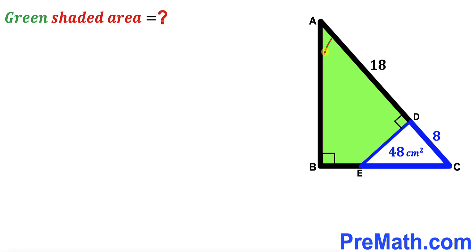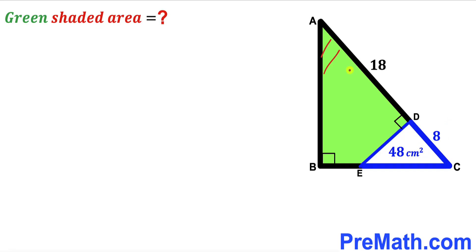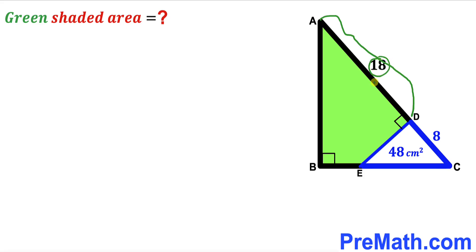Welcome to PreMath. In this video we have got a big right triangle ABC that consists of this blue right triangle CDE and this green shaded quadrilateral ABED, as you can see in the given diagram. The area of this blue triangle has been given to us as 48 centimeters square, the segment CD length is 8 centimeters, and segment AD length is 18 centimeters. Our task is to calculate the area of this green shaded region.